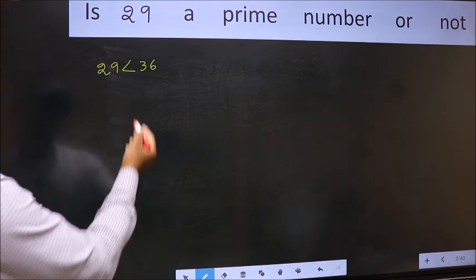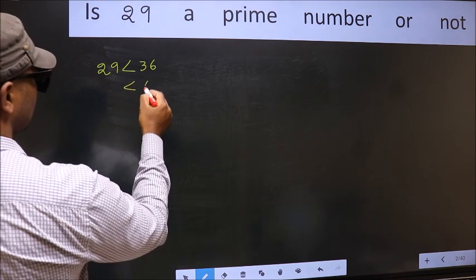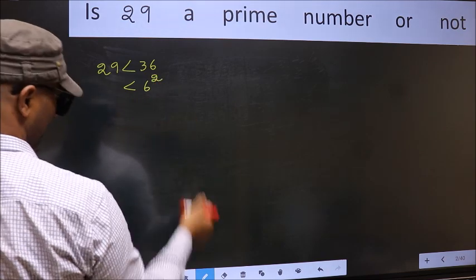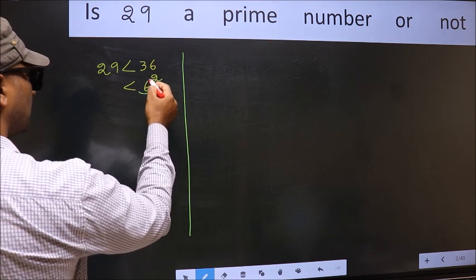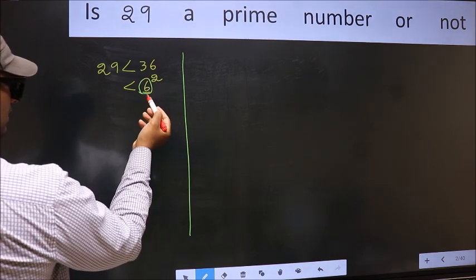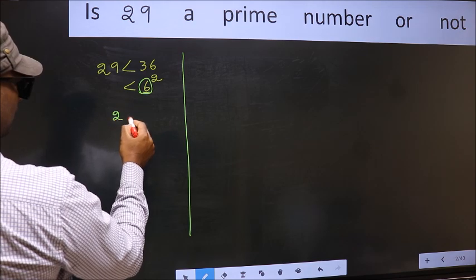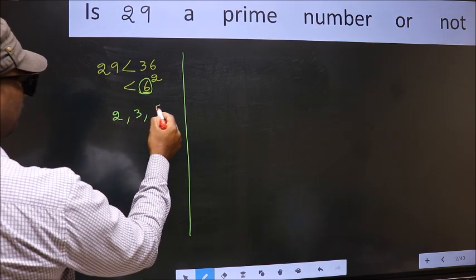Next, 36 is nothing but 6 square. Now, write all the prime numbers less than this number 6. They are 2, 3 and 5.